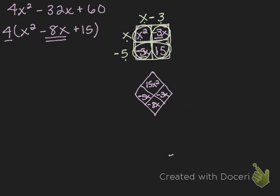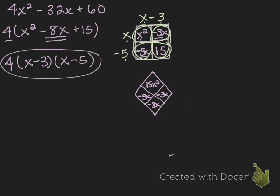So in the long run, I'm going to write this out as the 4 that I started with, times the quantity x minus 3, times the quantity x minus 5. And this is your completely factored expression. If we were to use the distributive property, it would get us back to the equivalent expression, which means we've done it correctly.